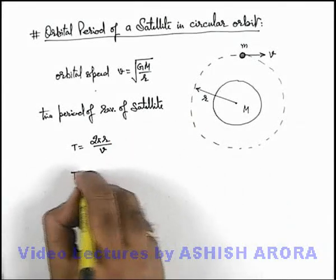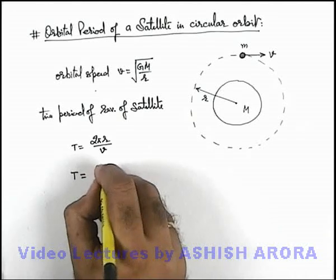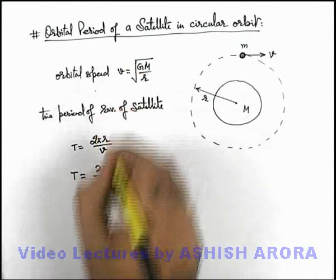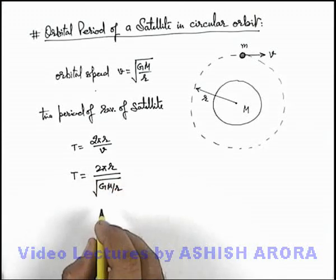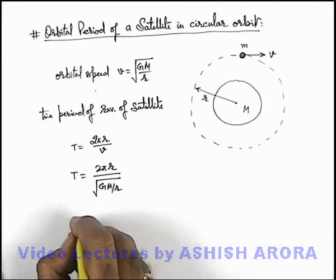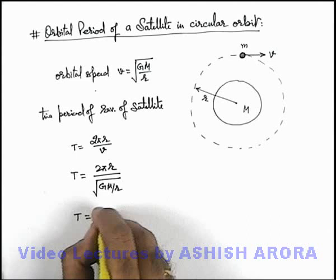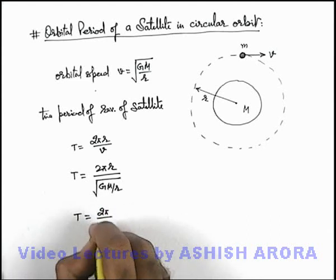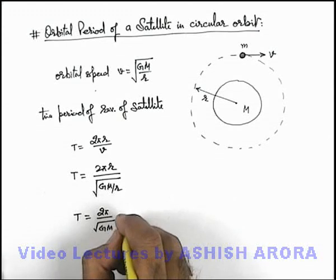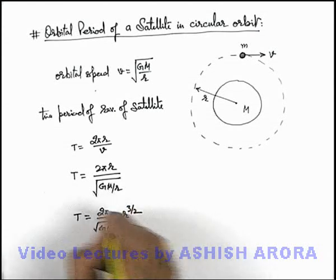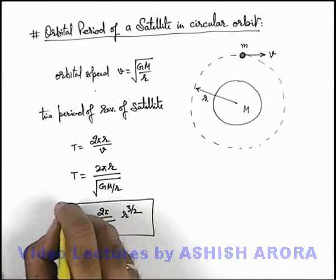So we substitute the values then T can be written as 2 pi r by speed, which we can write as root of G M by r. Then we can see the value of time period we can write as 2 pi by root of G M. If this root r can be taken up it'll be r to power 3 by 2. This is quite useful to understand.